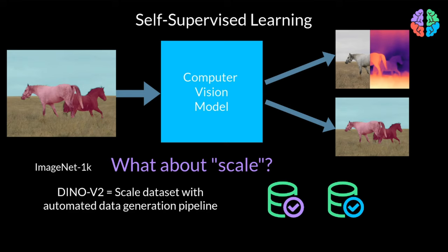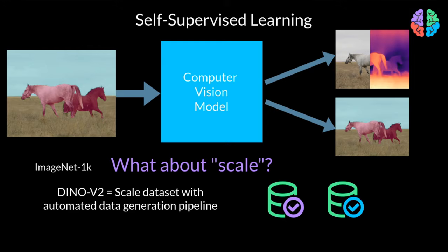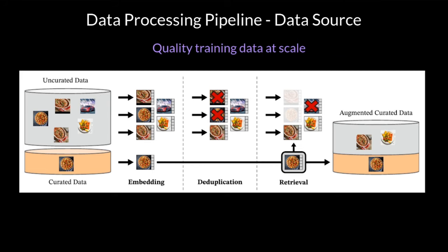In this video, let's learn about the data processing pipeline, which is the main contribution of the paper. The aim of this pipeline is to get quality training data at scale. This is the figure from the paper, and there are two sources of data for this pipeline: a curated dataset and an uncurated dataset.